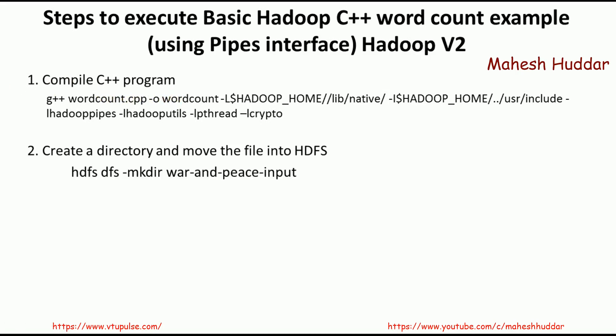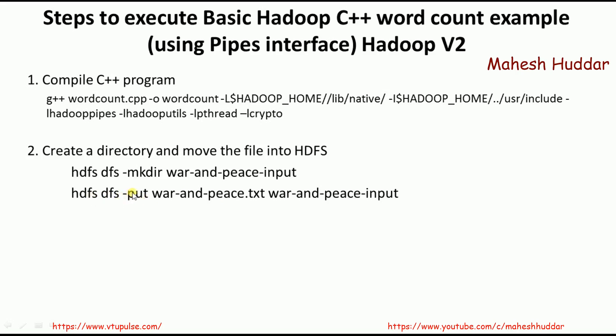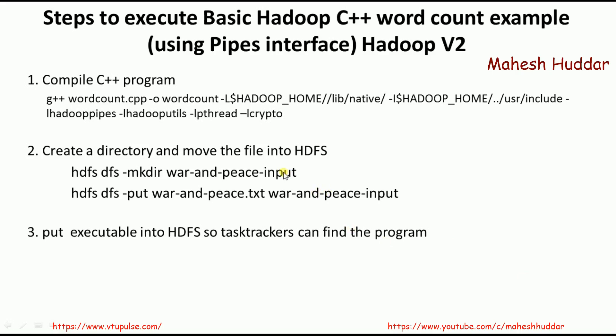Once compiled, we get the wordcount object file. The next step is to put our input text file into the HDFS cluster. We create a directory using: hdfs dfs -mkdir, then put the text file into that directory using hdfs dfs -put. We also put the wordcount object file generated in the first step into a bin directory in the HDFS cluster.